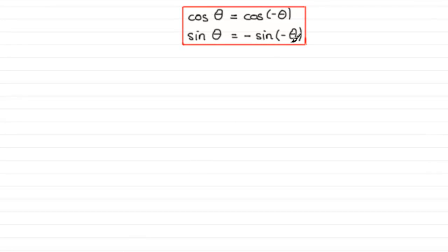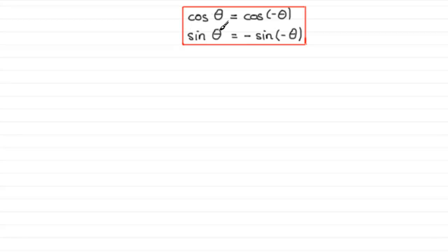What I want to do is introduce you to this result, which you're going to need when dealing with trigonometry. The cosine of any angle theta, whether in degrees or radians, is equal to the cosine of minus that angle. When it comes to sine, sine of theta is always equal to minus the sine of that negative angle. Do try and learn this result.